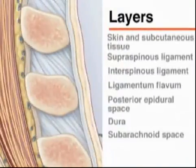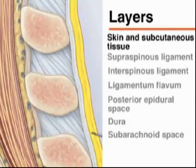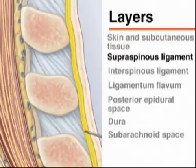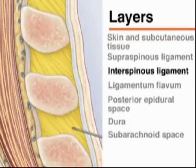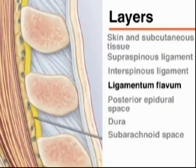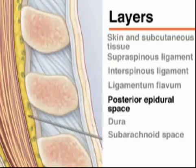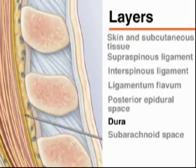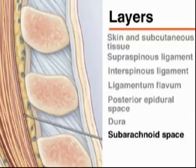If properly positioned, the needle should pass through the skin, the subcutaneous tissue, the supraspinous ligament, the interspinous ligament between the spinous processes, the ligamentum flavum, the epidural space including the internal vertebral venous plexus, the dura, the arachnoid, into the subarachnoid space, and between the nerve roots of the cauda equina.